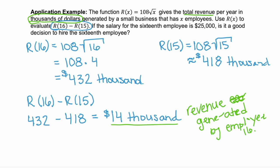So now we get to the actual question. If the salary for the 16th employee is $25,000, is it a good decision to hire the 16th employee? Well, let's think about that. We're willing to pay this person $25,000 a year, but they only earn $14,000 in revenue for the company. So we'd be losing $11,000 every year just by hiring that person. So, as a good business owner, no, we don't want to hire that person, because we would lose money.